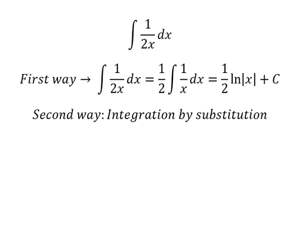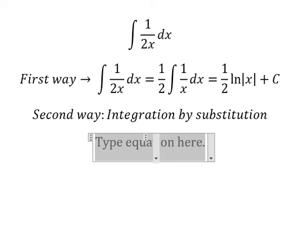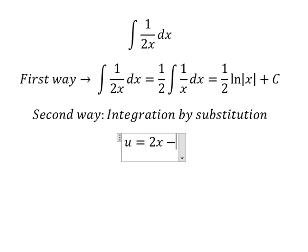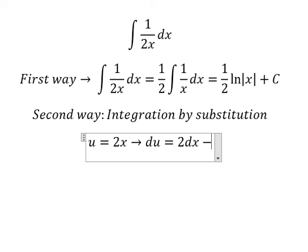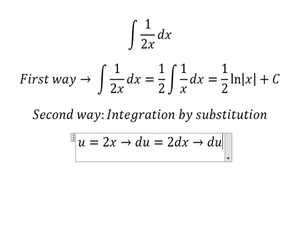So I will put u equals to 2x. Later we do first the derivative for both sides, and we have du = 2dx. Because we don't have number 2 in here, so we divide both sides by number 2.